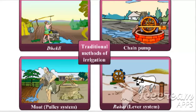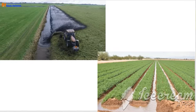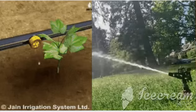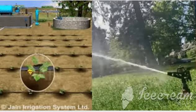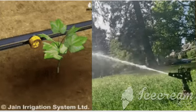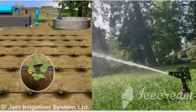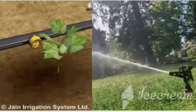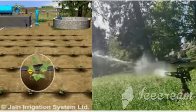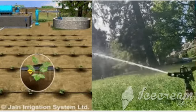There are two types of irrigation: traditional methods and modern methods. Drip irrigation and sprinkler system of irrigation are the modern methods. In drip irrigation, water is irrigated drop by drop near the root of the plant. In sprinkler irrigation, water is pumped under pressure through nozzles and sprayed to all the plants.